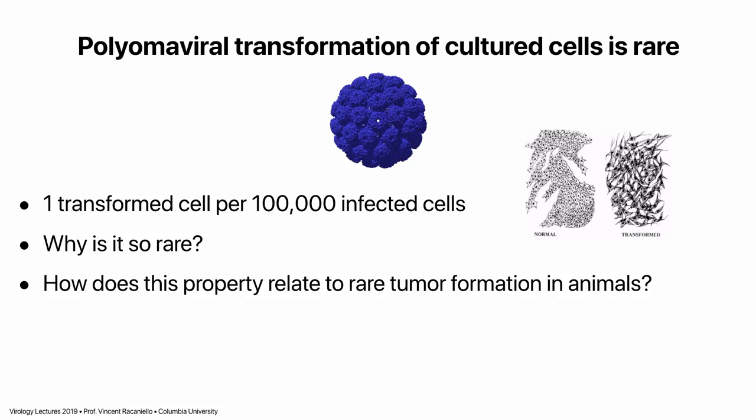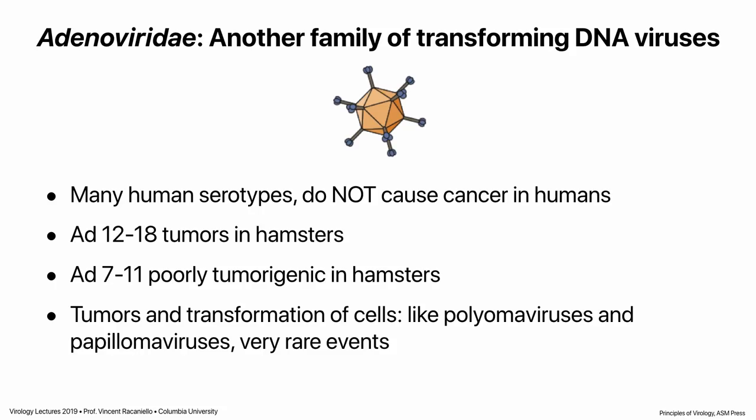Another family of DNA tumor viruses: adenoviruses, which we've talked about. There are many human serotypes, but none cause cancer in humans. Serotypes 12 through 18 will cause tumors in hamsters — the wrong host. Serotypes 7 to 11 are poorly tumorigenic. Again, these are very rare events. Transformation of cells in culture by these viruses is very rare. It's always when it's the wrong host. Adenovirus does not cause tumors in humans, and humans are the natural host of human adenoviruses.